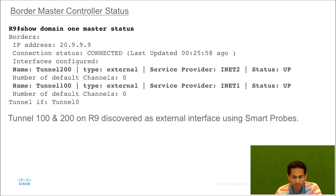On the R9 spoke side, there is no explicit configuration required to identify external interfaces as they will be auto-discovered from the hub master controller router using smart probes. As shown in this output, on R9, which is our border master controller router, we see that tunnel 100 and tunnel 200 are discovered as external interfaces using smart probes which were sent by the hub master controller R3.